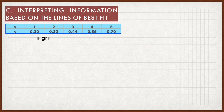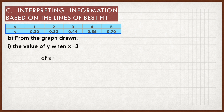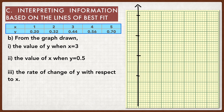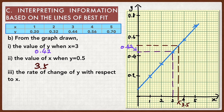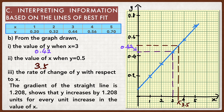Let's look at another example. From the graph drawn, find the value of y when x equals 3; find the value of x when y equals 0.5; and find the rate of change of y with respect to x. From the graph, when x equals 3, the value of y is equal to 0.42. When y equals 0.5, the value of x is equal to 3.5. From the earlier answer, the gradient of the straight line is 1.208. Therefore, the rate of change is 1.208, showing that y increases by 1.208 units for every unit increase in x.